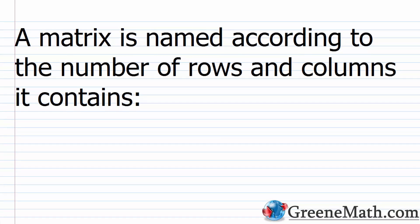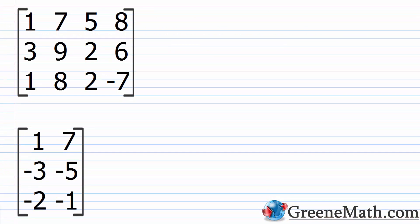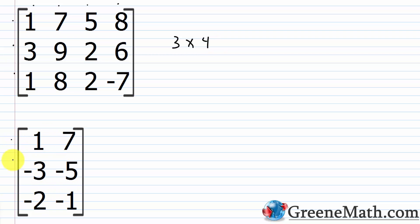For example, if you have three rows and four columns, that's a three by four matrix. Similarly, if you have three rows and two columns, that's a three by two matrix.